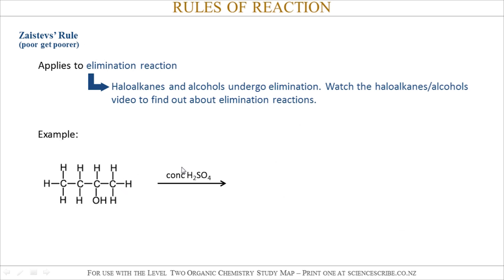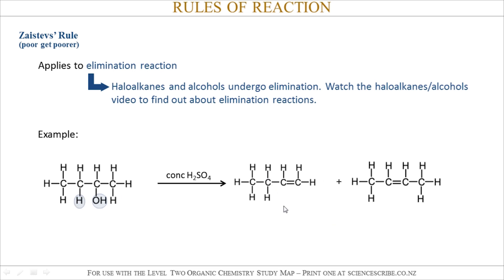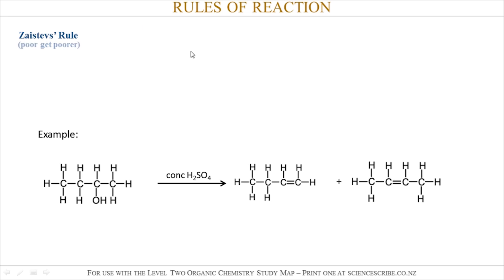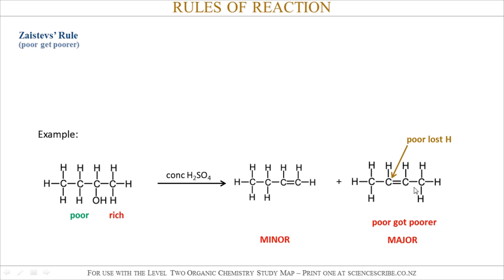Here's an example with an alcohol reacting with sulfuric acid. In an elimination reaction, our definition is that we remove two atoms or groups of atoms from two neighboring carbon atoms to form a double bond. I could have chosen to kick out the OH and that H, or this OH and this H here — so I get two possibilities. The rule is 'poor get poorer,' so I have to assign rich and poor again. This carbon atom is rich because it has three hydrogens; this carbon atom is poor because it only has two. In this example, the poor lost a hydrogen — so the poor got poorer. That means it followed Zaitsev's rule, making this the major product and the other the minor product.